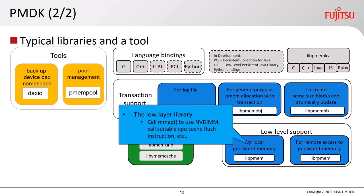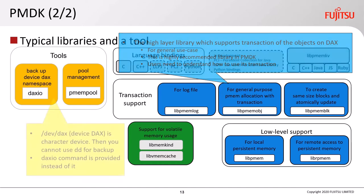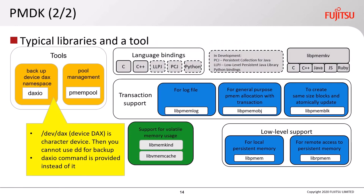Let me introduce some PMDK libraries. The first is libpmem — it is a low-level library. It calls mmap to use NVDIMM and calls the suitable CPU cache flush instruction, etc. libpmemobj is a high-level library which supports transactions of objects on DAX. It is for general use cases and is the highly recommended library in PMDK, though users need to understand how to use its transactions. Since device DAX is a character device and you cannot use dd for backup, the daxio command is provided instead.